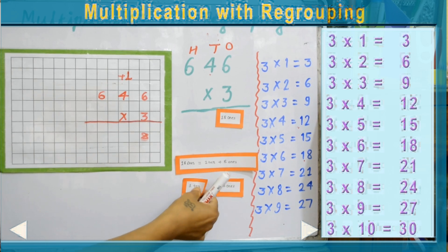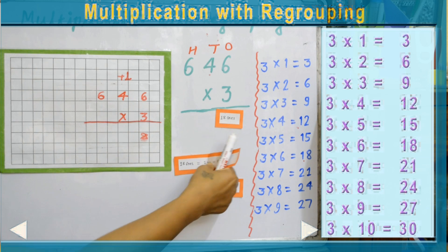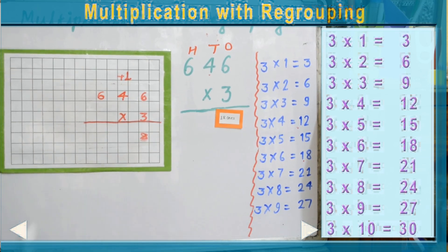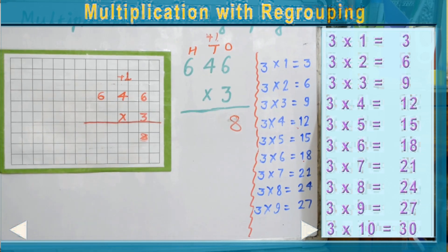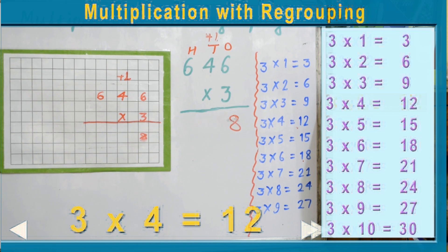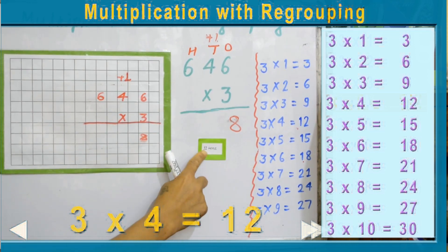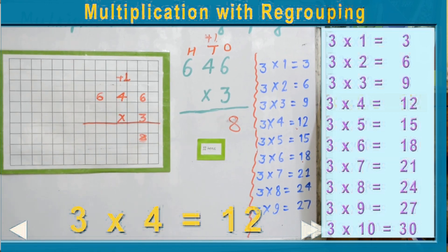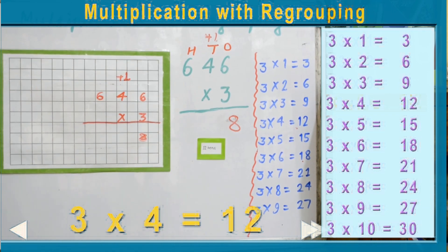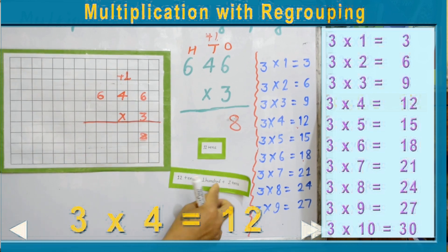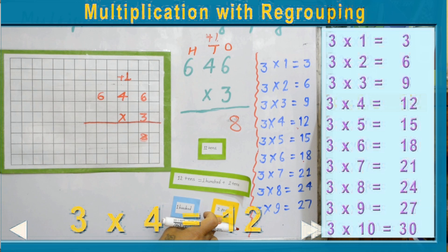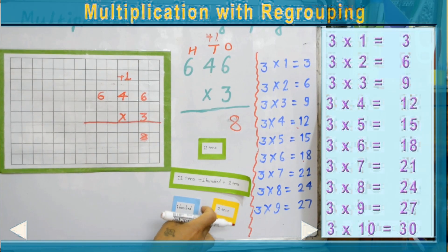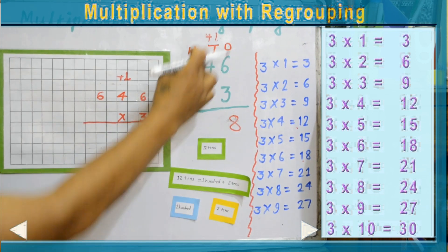Now we have to multiply the tens digit. We have 4 in the tens place, so 3 times 4 is 12 — that is 12 tens. Again, the tens place can hold only one digit, so we need to regroup 12 tens, which is one hundred and two tens. We write the two tens here, but we also need to add the carry over — so two tens plus one ten is three tens.